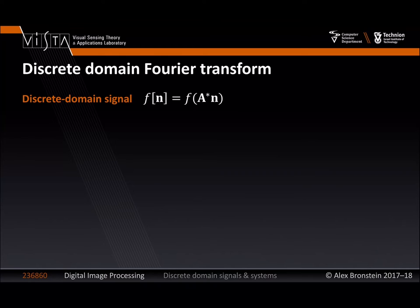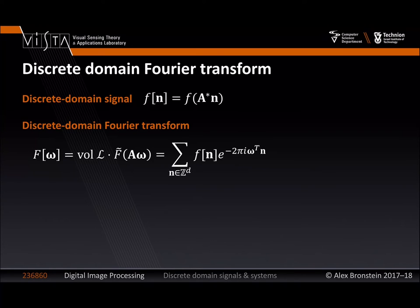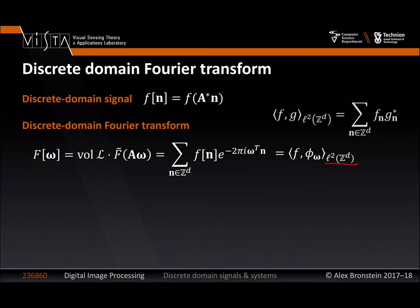This is my discrete domain signal. The Fourier transform can be written as an inner product between F and the harmonic with parameter omega. Now this is an inner product on lowercase l-squared on Z^d — the space of square summable sequences on Z^d. Before we had capital L-squared, the space of square integrable functions on R^d. Now we have square summable sequences on Z^d, and we equip it with this inner product. So the discrete domain Fourier transform is simply a projection of the sampled sequence onto discrete harmonic sequences, and it resembles the original continuous domain definition of the Fourier transform.